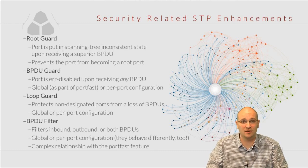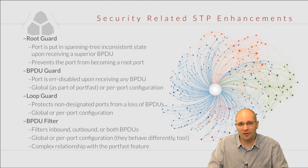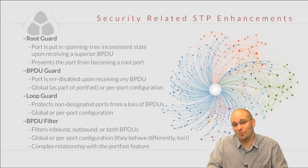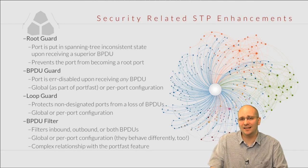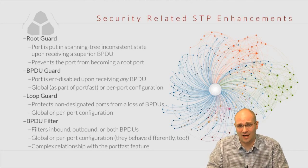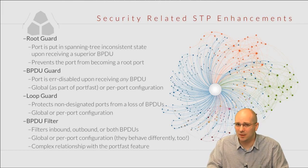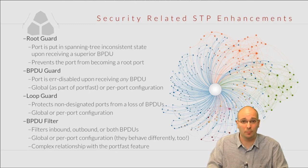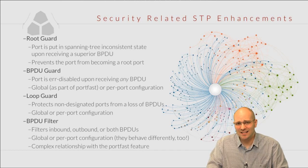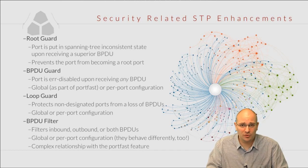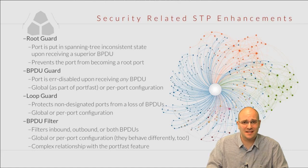If we continue receiving BPDUs on that port, the port will move out of an inconsistent state. The BPDU filter is quite possibly the most complex of all these features, even though it may not sound like that at first glance. It can be used to filter inbound, outbound, or both kinds of BPDUs — those coming out of the port and those coming in to the port. This behavior depends on how the BPDU filter is configured: whether it's configured globally as part of a complex relationship with the port fast command, or whether it was configured on a per-port basis. Let's now look at all these features — both security and performance based — in greater detail.